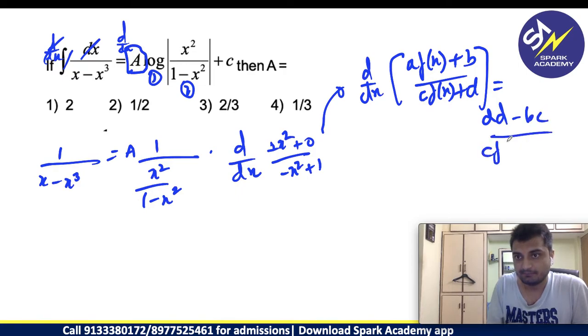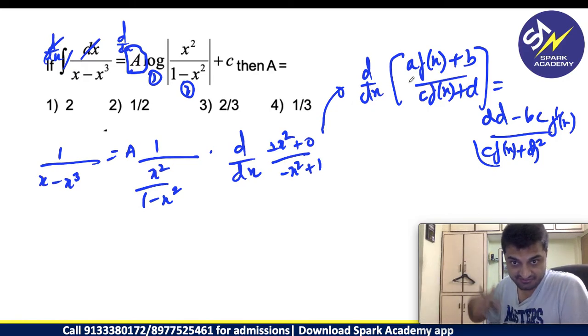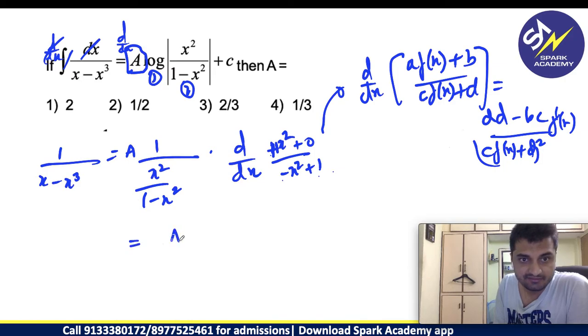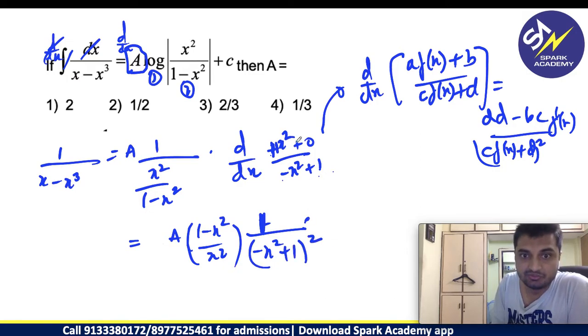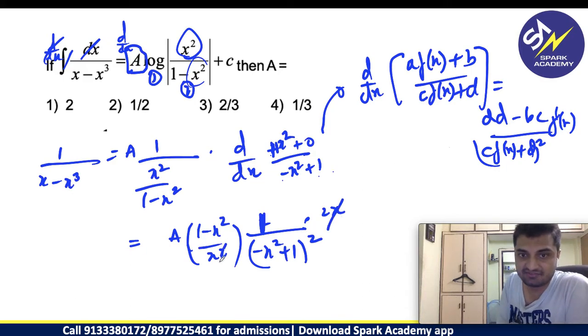Isn't this like our shortcut A f of x plus b d by dx of A f of x plus b by C f of x plus d? This we know how to do. Which is A d minus b c by C f of x plus d whole square into f dash of x. You can refer the differentiation quick revision concepts and tricks. I have discussed this. Here this is like plus 1. This is like minus 1. I can write 1 into 1 minus 0. This will be A into 1 minus x square by x square. If I take LCM into this will be 1 minus 1 is 2. 1 into 1 is 1 actually. This is 1 into 1, 1 minus 0 by minus x square plus 1 whole square into derivative of x square is 2x.